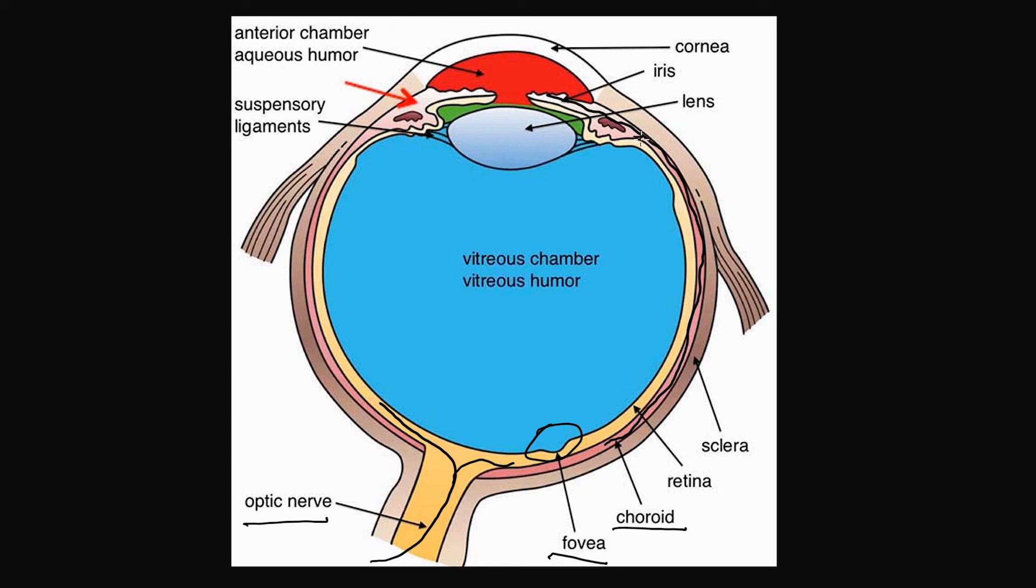And then you also turn into the ciliary body, here, which is connected to the zonular fibers, which is also known as the suspensory ligament. And those are connected to the lens, here. And in front of the iris, here, you have the anterior chamber. And behind the iris, here, you have the posterior chamber.